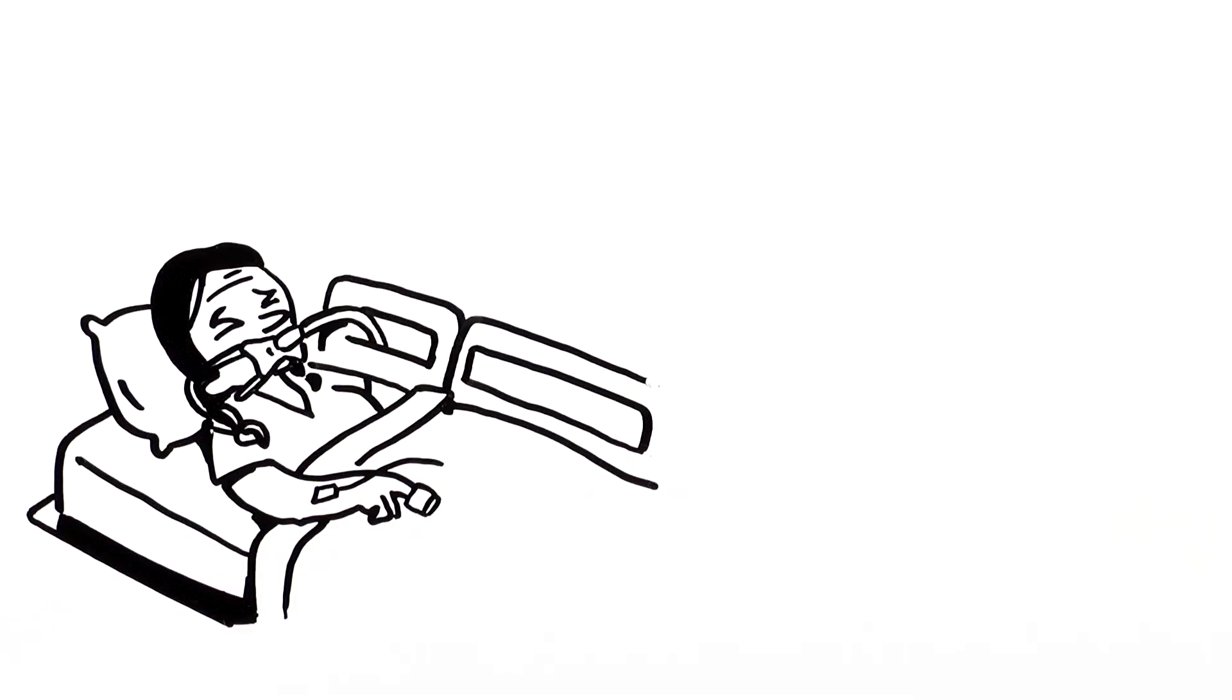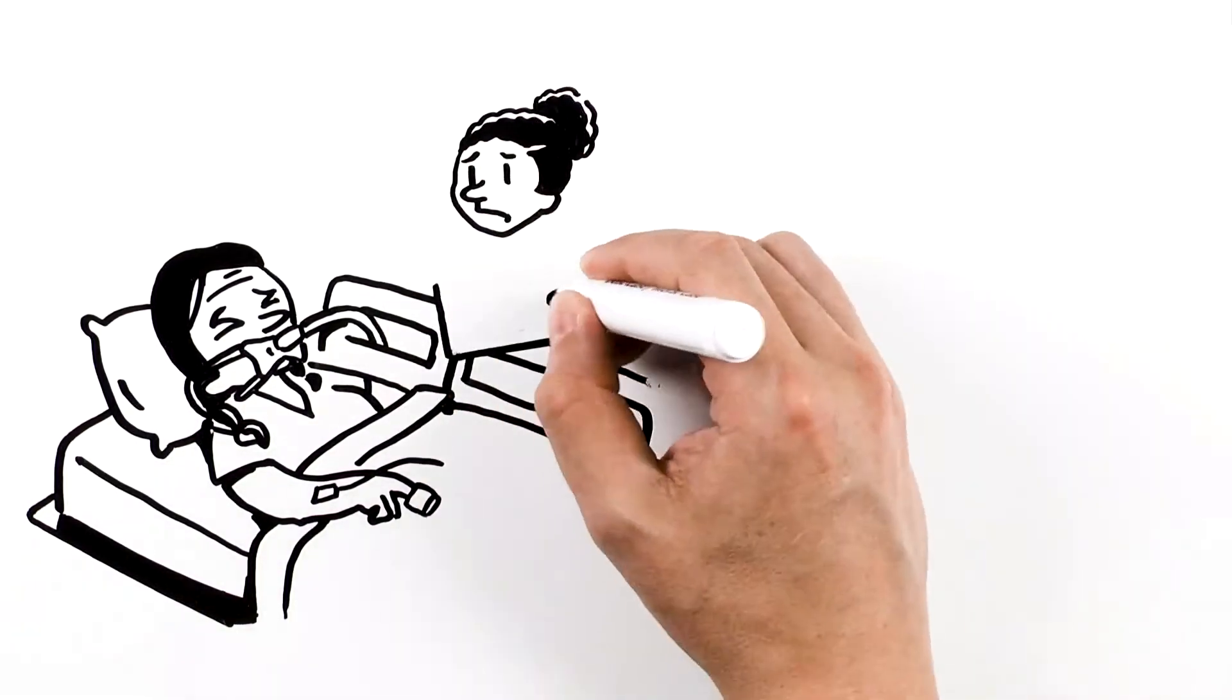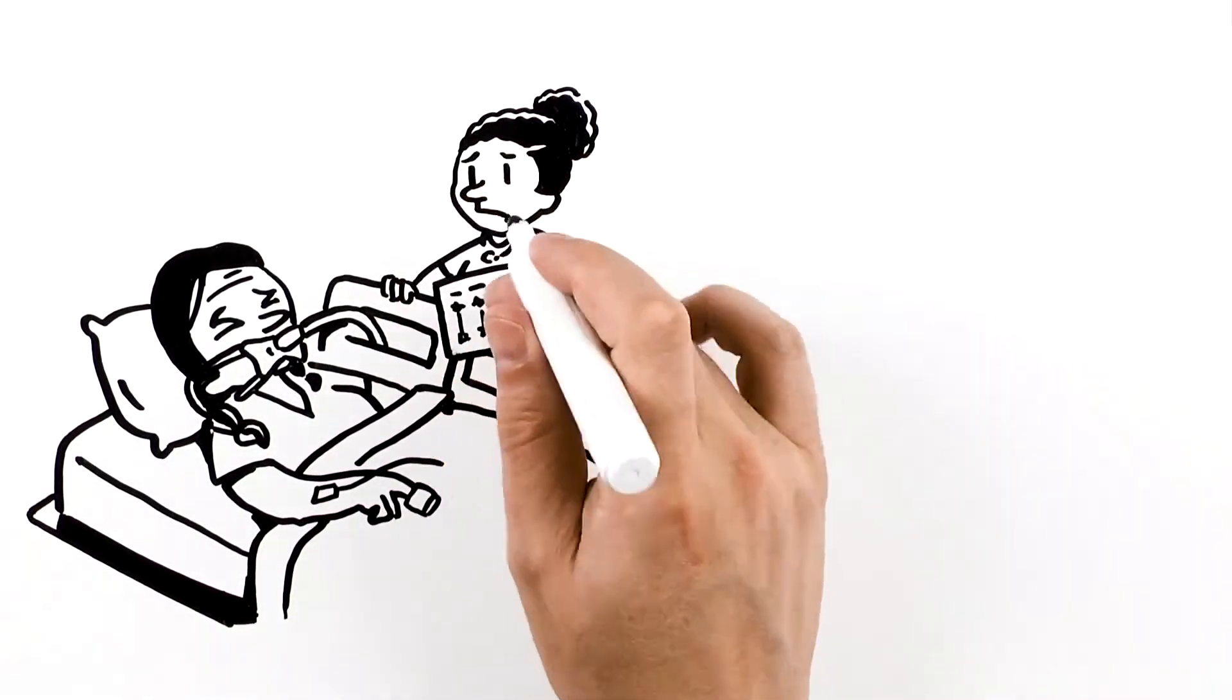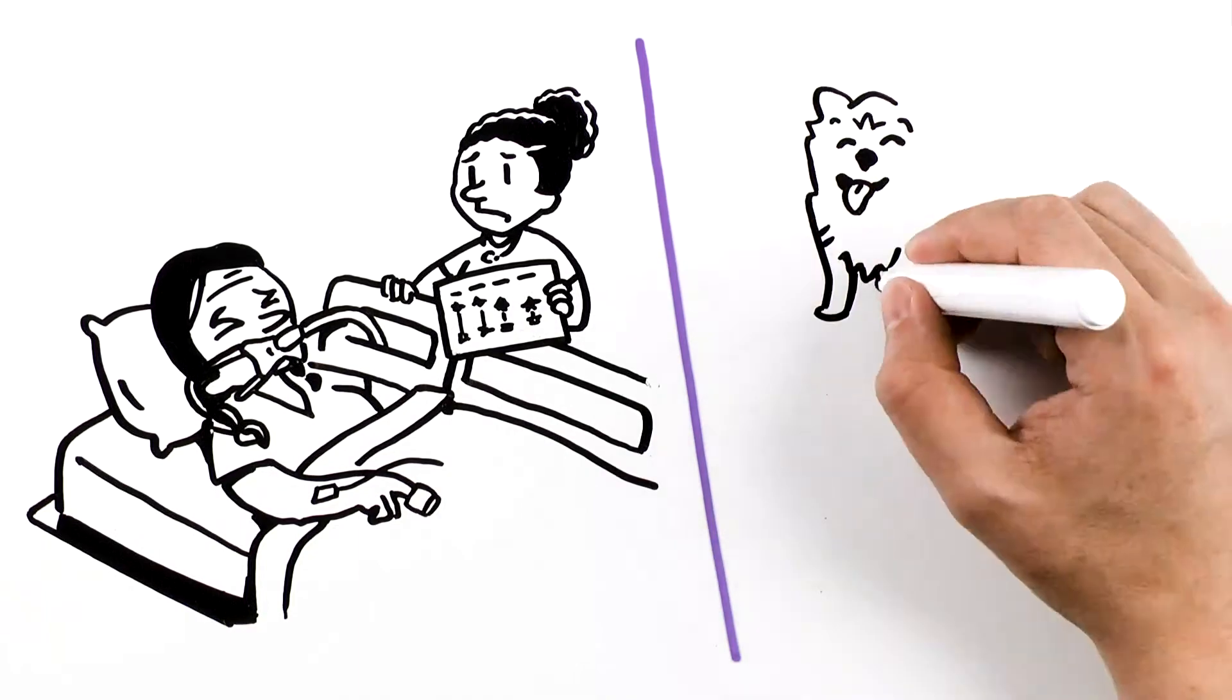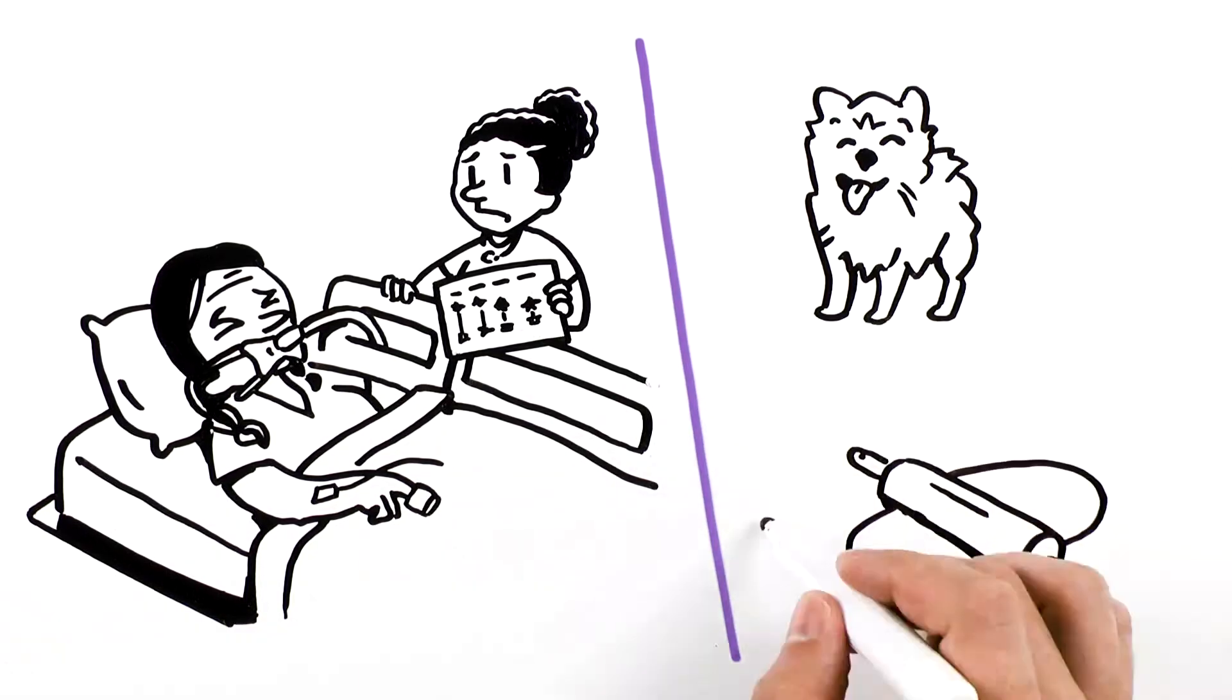When you leave the graphic aid at the bedside, Yara's family can use your notes to recall what to expect, understand that there is uncertainty, and see how things change over time. They can use the flip side to let you know about Yara's life, that she enjoys her dog Toto and baking with her grandchildren.